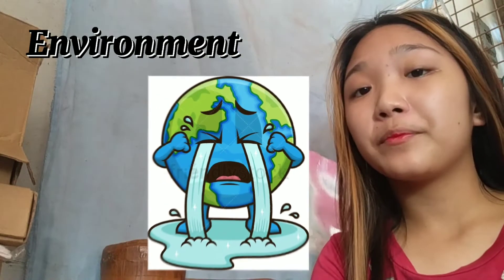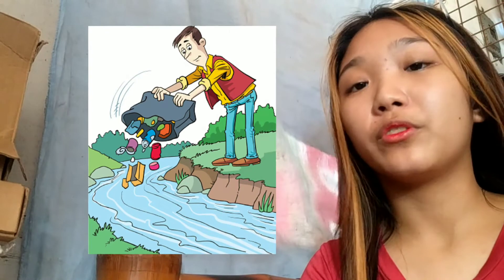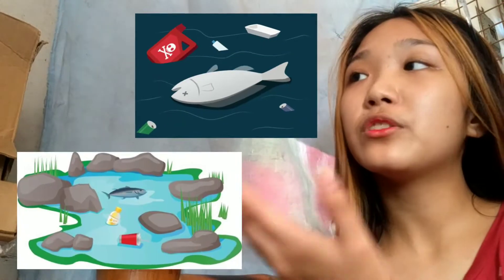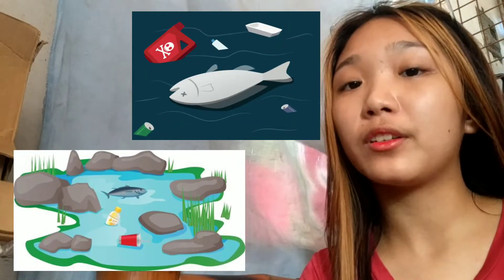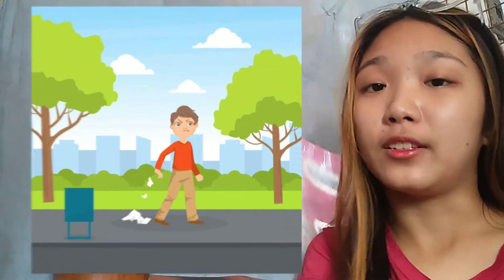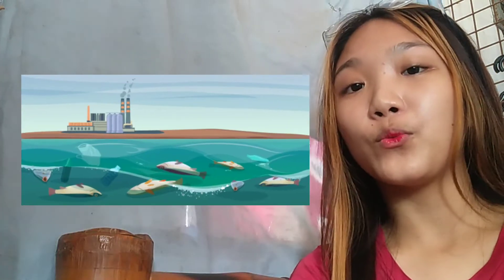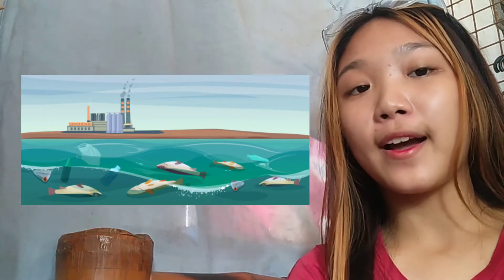But the environment is not being taken care of, and here are some reasons. First, rubbish dumped into the river can cause fish to die because the water is already polluted. Second, rubbish thrown in a poor industry can cause a bad smell and it affects our health. And lastly, factories produce chemicals that will pollute the air and also the water, which has a big impact on our health.